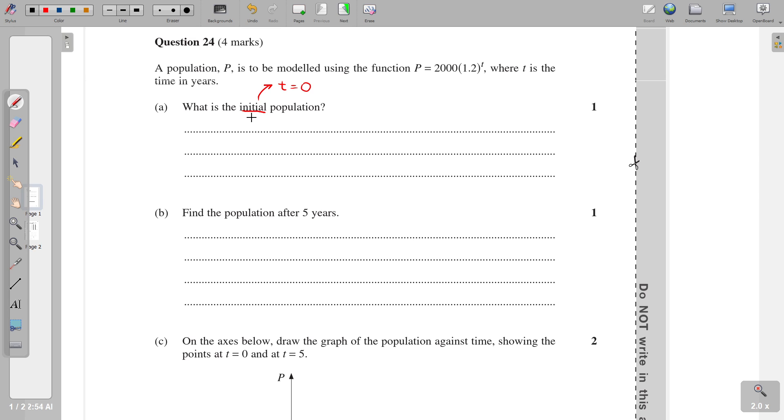And so that means that our population will be 2000 times 1.2 to the power of zero. And if you were to calculate this, you would actually get 2000. And that's because any number to the power of zero always equals one. And when you multiply by one, nothing happens. And so it's just going to be 2000.